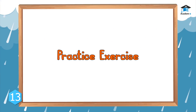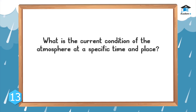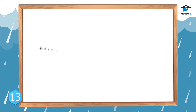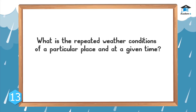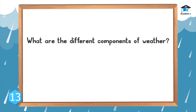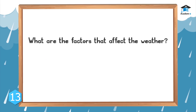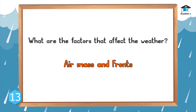Practice exercise: What is the current condition of the atmosphere at a specific time and place? The answer is weather. What is the repeated weather conditions of a particular place at a given time? The answer is weather pattern. The components of weather are air temperature, atmospheric pressure, wind, humidity, precipitation, and clouds. The factors that affect the weather are air mass and fronts.